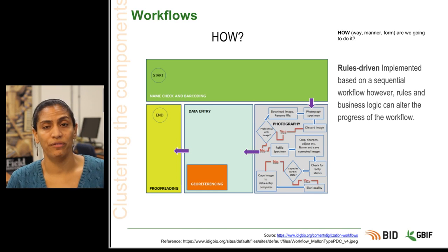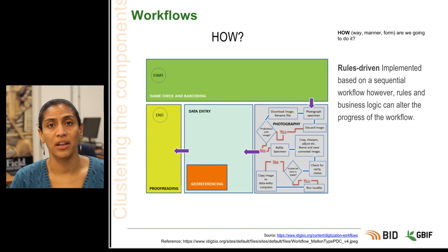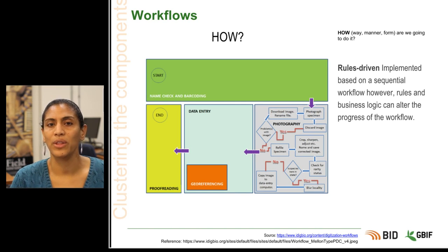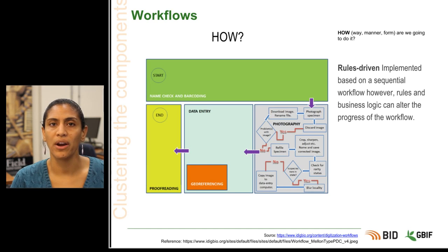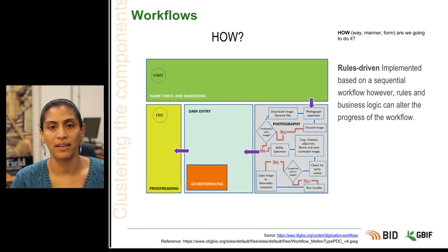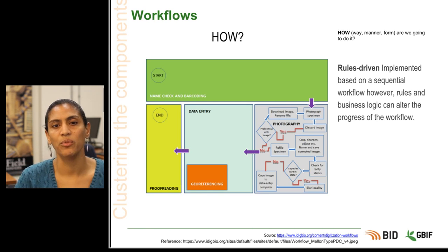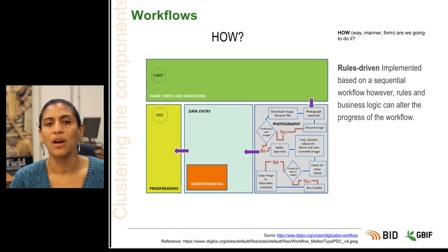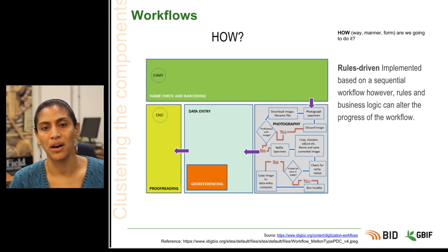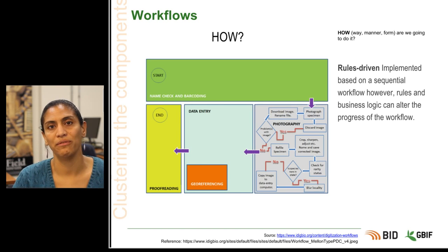Rules-driven workflows often also have an underlying sequential workflow. However, within each task cluster, rules and logic can alter the process and progress of the workflow. In this example, in the lower right corner in the photography task cluster, there is a quality check logic gate. If there is a problem with the image, it is discarded and the specimen goes back to be photographed. Only when the quality check has been passed can the workflow continue and the specimen be refiled.